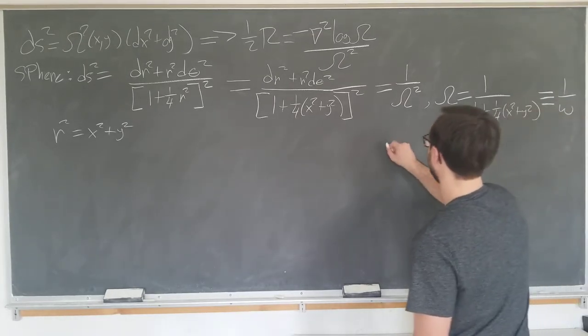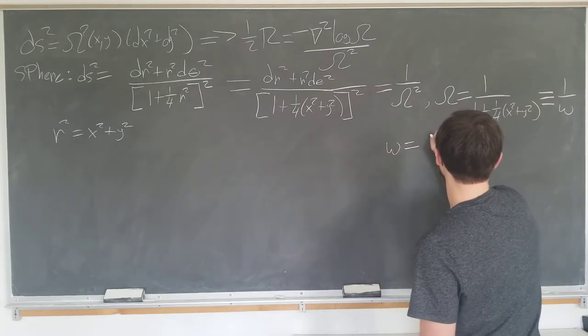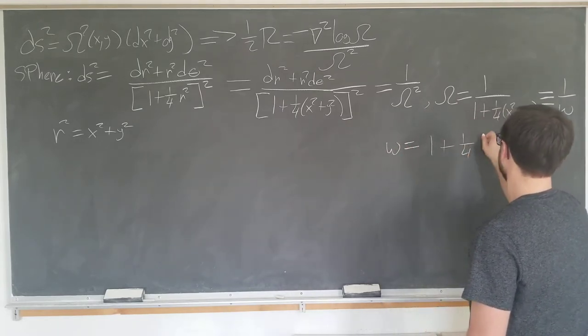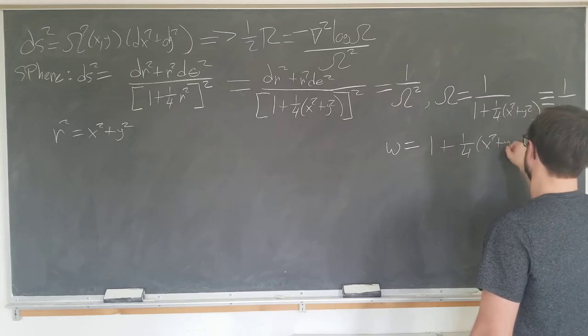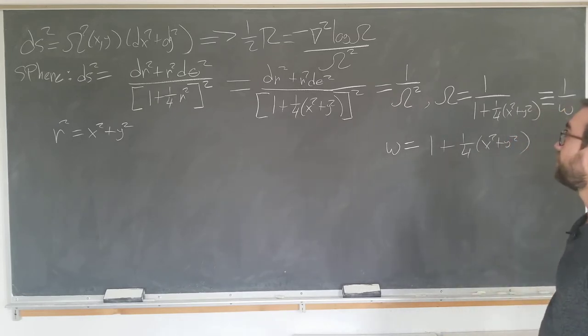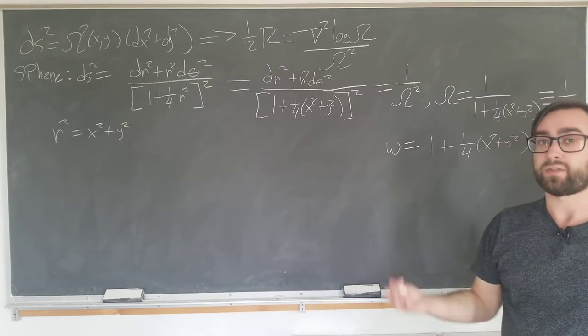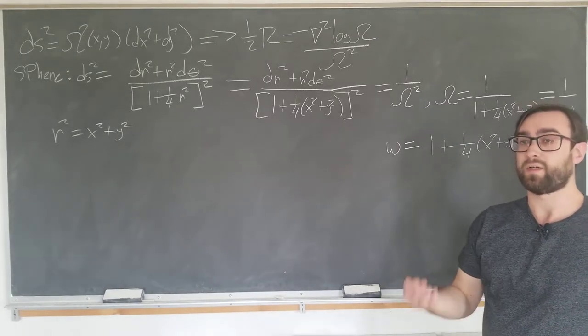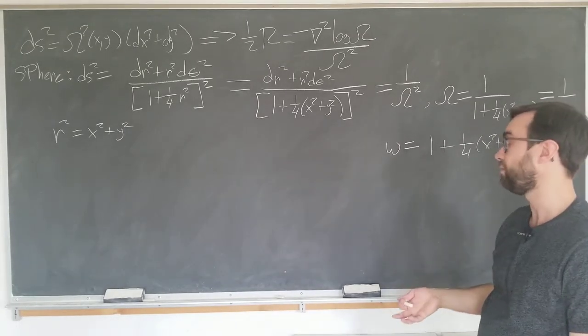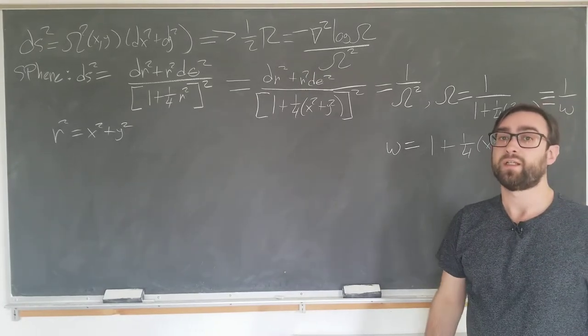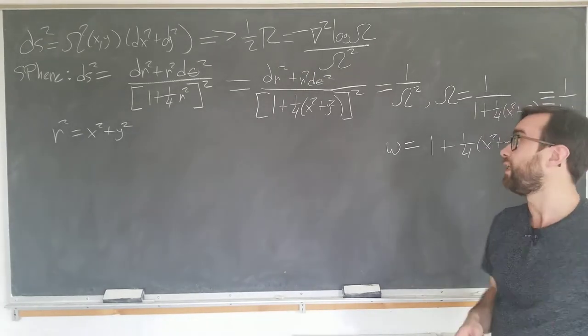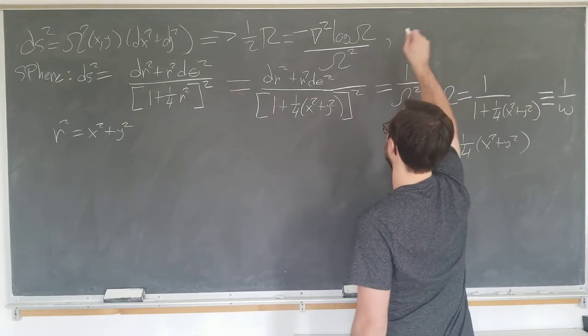So we have that little omega is one plus one quarter x squared plus y squared. We see that we have the Laplacian here. We're going to eventually have to take the derivatives of omega. I'm only going to do it for the x derivative since the y derivative is the same by symmetry. Let's start computing derivatives.